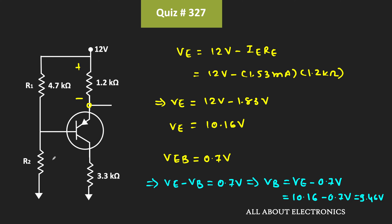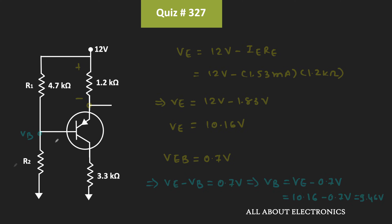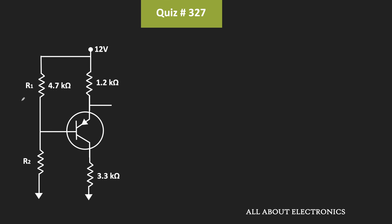In this way, we found the voltage at this node — the base voltage. Using this, we can find resistor R2. Let's say the current through resistor R1 is equal to I1, while the current through resistor R2 is equal to I2. This current I2 is related to the base current, meaning I2 is equal to I1 plus IB.